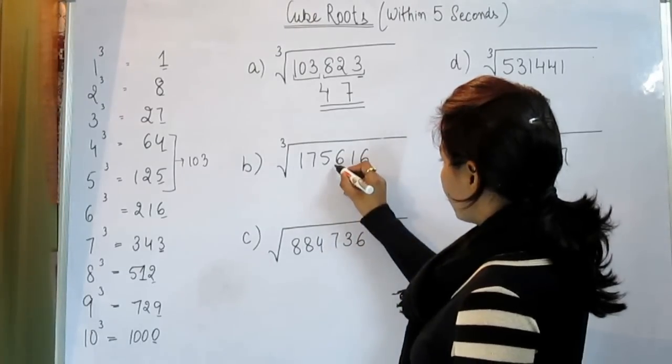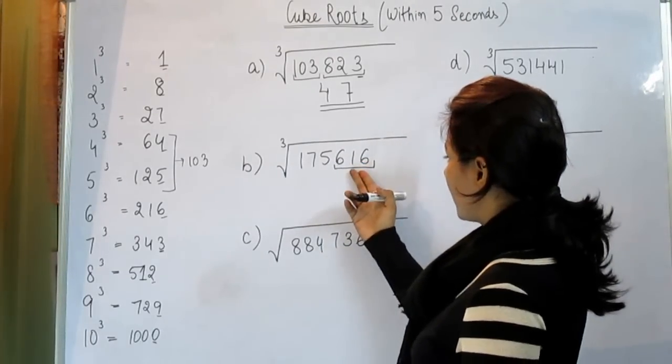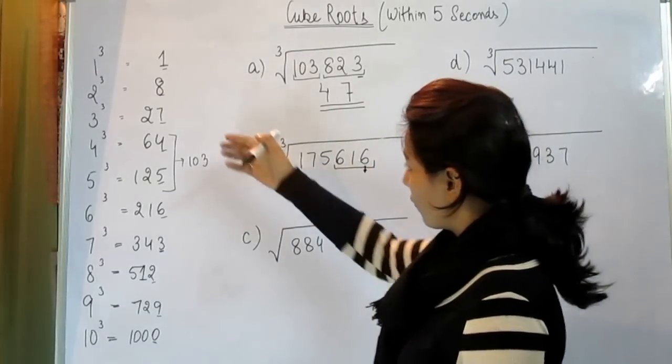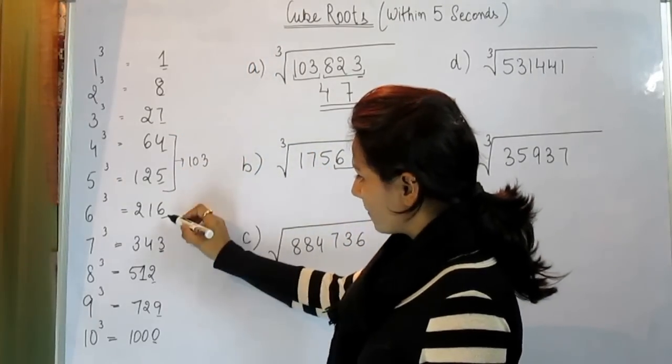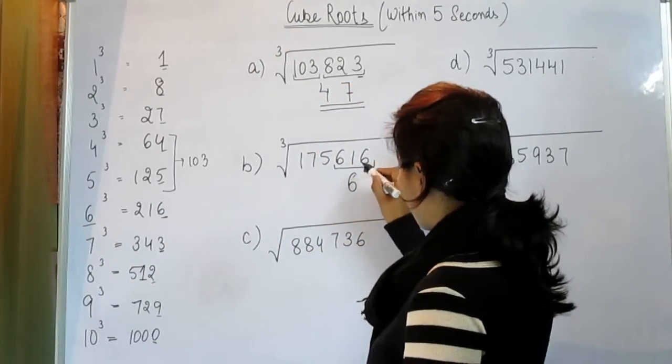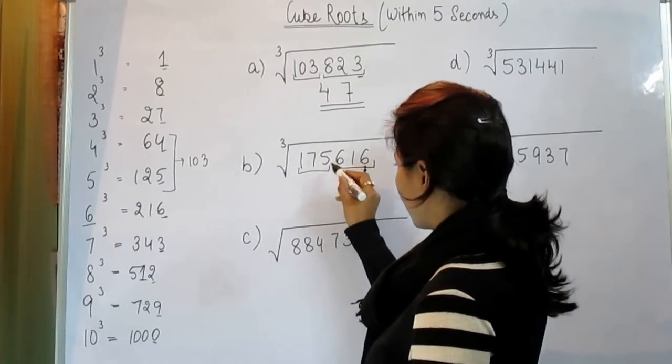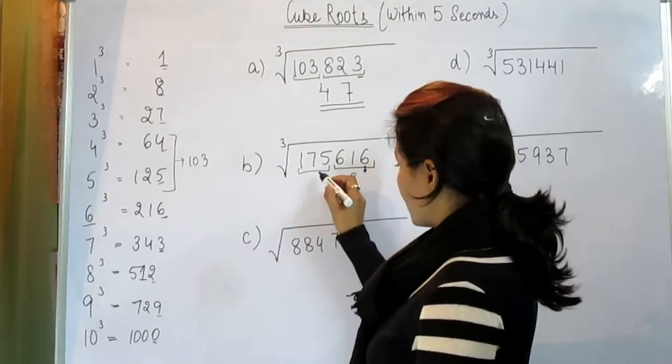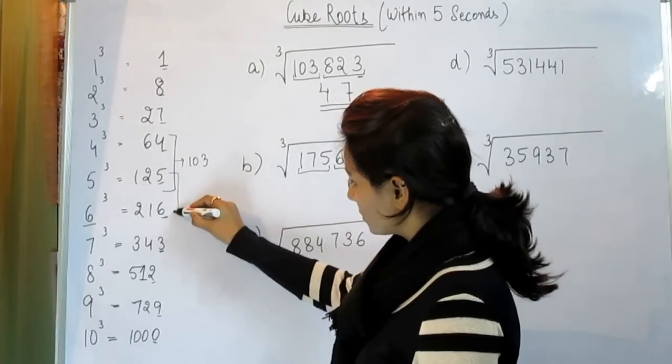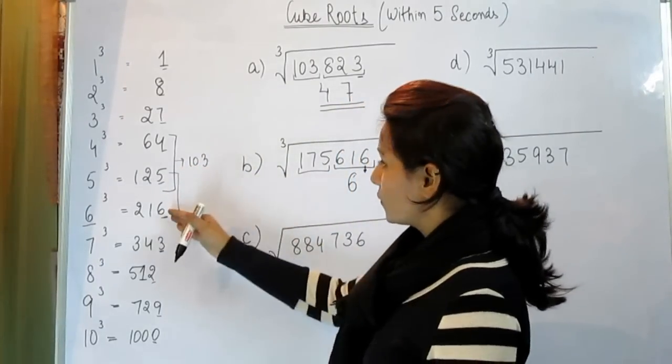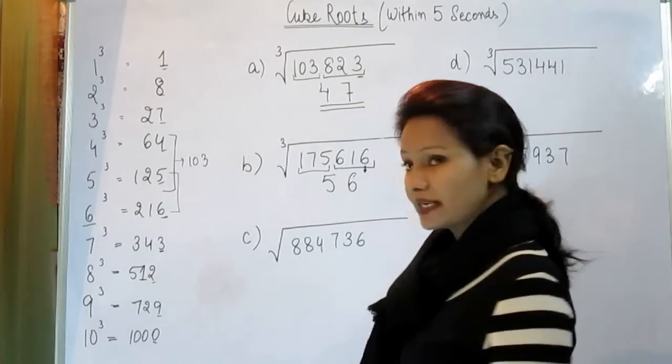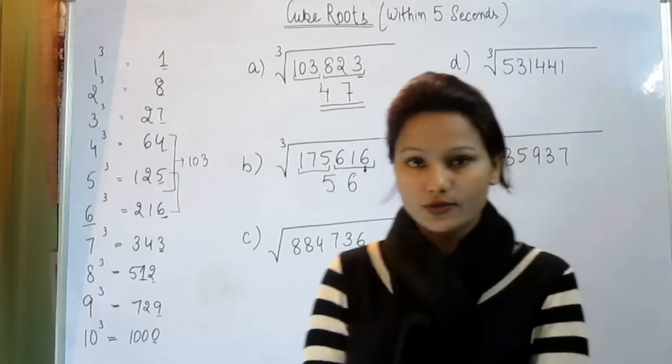Now come to the next portion. Take the last three digits. At the end we can see 6 is written. Where is 6? 6 is here. So put this 6 here. And now we have 175 in this pair. Now check, 175 comes between these two numbers. So we always take the smallest number that is 5. So when you multiply 56 three times, you will get this answer.